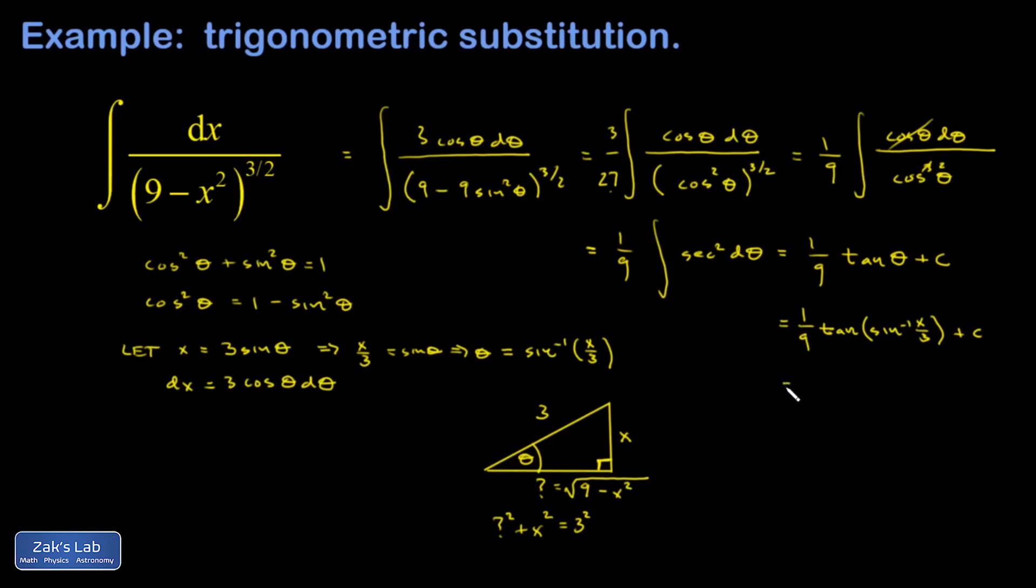So back to my final answer. I need the tangent of this angle and that's going to be the opposite over adjacent. So I get 1 ninth and then x over square root 9 minus x squared plus c.